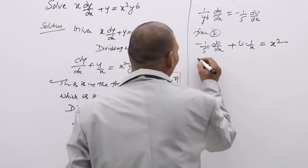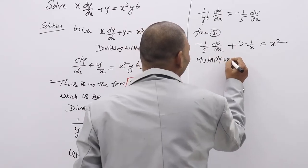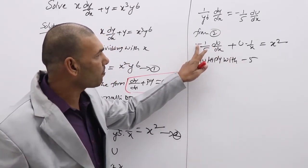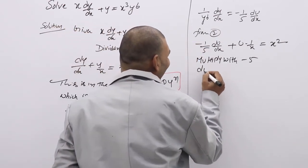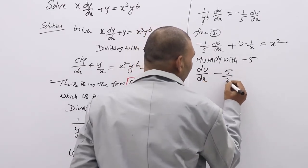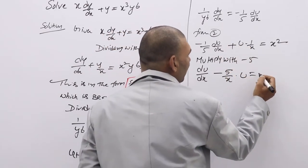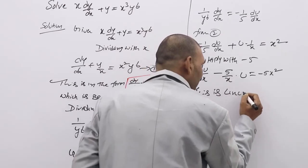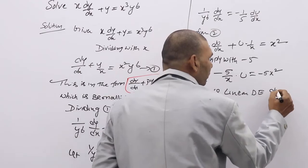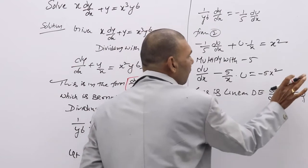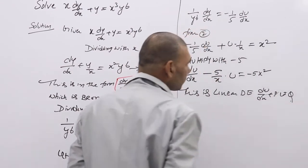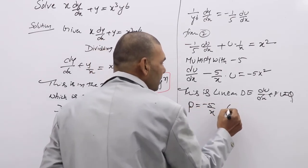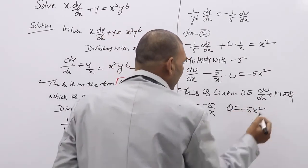Multiplying by minus 5 to get standard linear form: du/dx minus (5/x)·u equal to minus 5x². This is a linear DE in the form du/dx plus Pu equal to Q, where P equals minus 5/x and Q equals minus 5x².